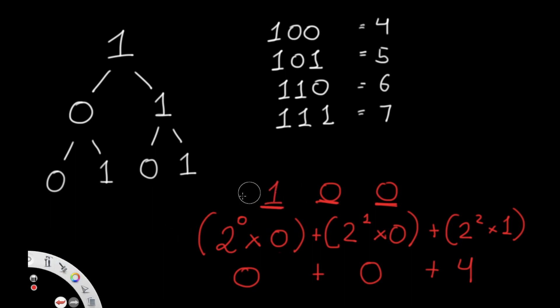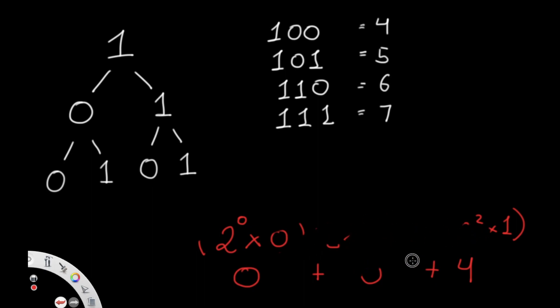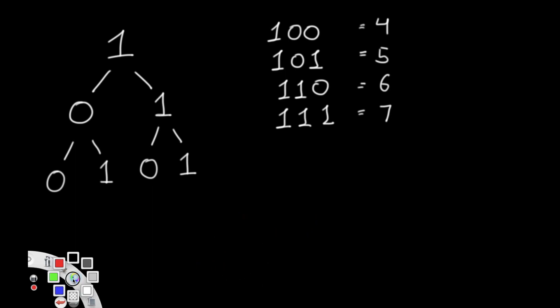There's actually a different representation of the same idea that will help us solve this question. We keep a running sum, starting at 0. Each step we do: sum = 2 × sum + current node value. Starting at the root with value 1: 2×0 + 1 = 1. So our sum becomes 1.